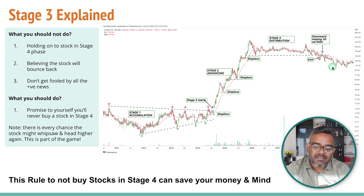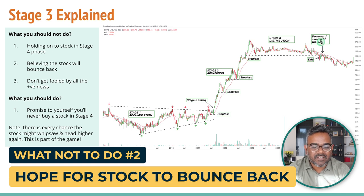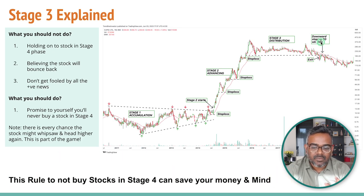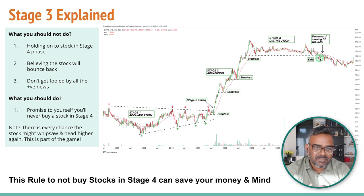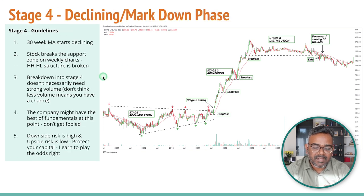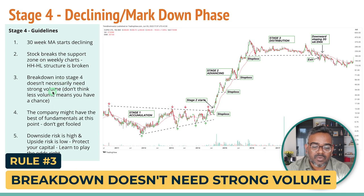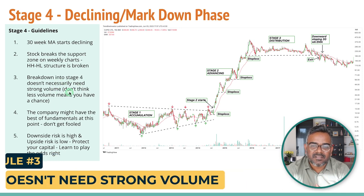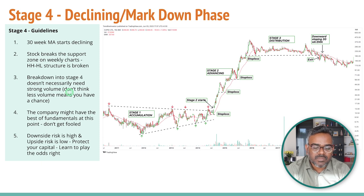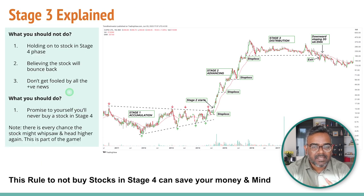Once the stock has fallen and broken support, do not think the stock will rise back up and break out — that's just hope and faith. Also, when a stock breaks down in Stage 4, volume will most likely be low. Just because volume is low, don't assume the stock will rise again. Stan Weinstein clearly says in his book that a Stage 4 breakdown doesn't necessarily mean strong volume. Many stocks break down on low volume and then volume picks up later as the stock falls further.